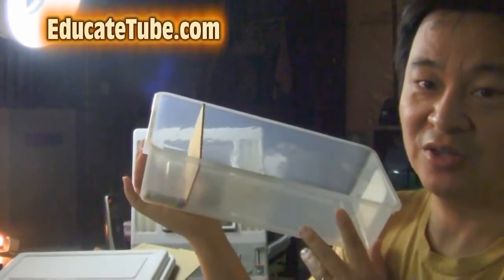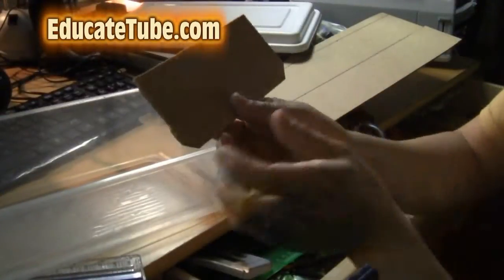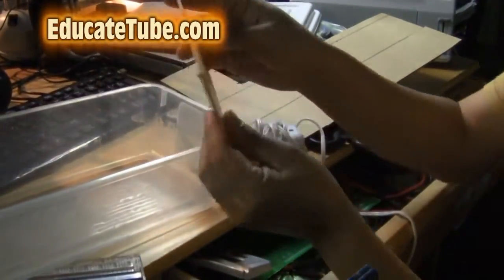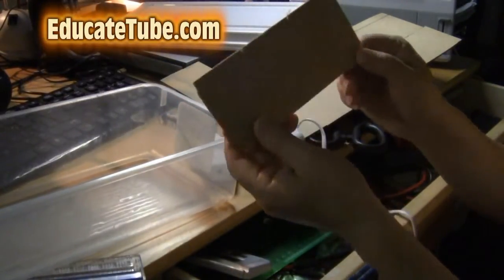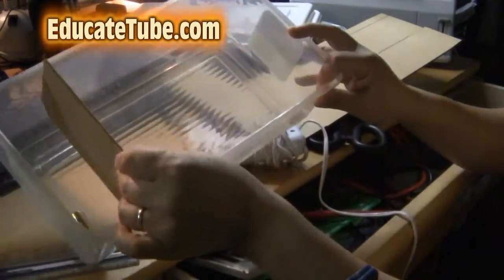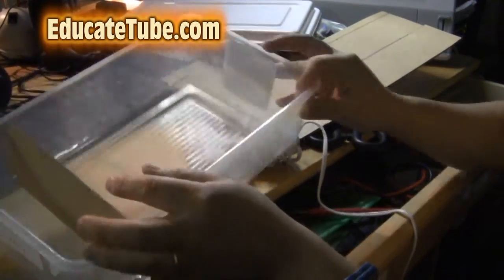So first thing you want to do is cut the bristol board panel so that it will fit snugly into the plastic box.